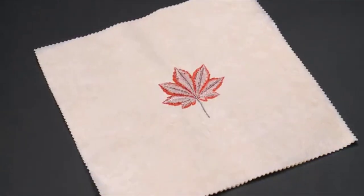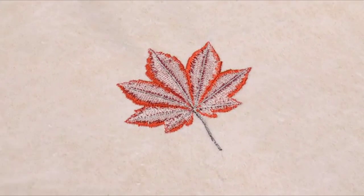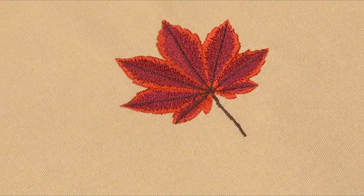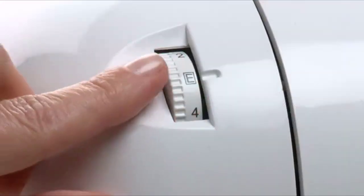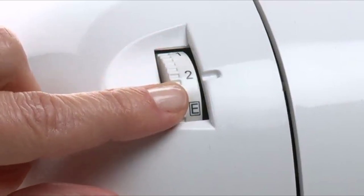This loosens the upper thread tension for embroidery so that the needle and bobbin threads lock on the back side of the fabric and are not visible on the top side. You may still adjust thread tension if desired depending on the type of fabric or thread being used.